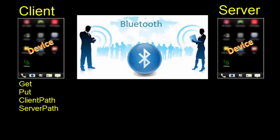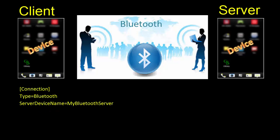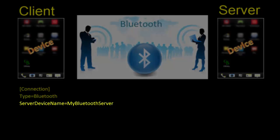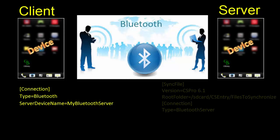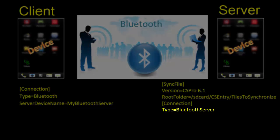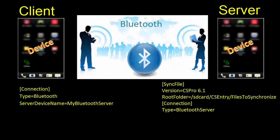On the client device, the only difference in the .pnc file for Bluetooth synchronization is the type of connection, which is Bluetooth, and the addition of the server device name indicating the name of the other tablet or phone that is acting as the server. The server tablet will also have a .pnc file with a connection type of BluetoothServer and without any GET or PUT commands. This is because all commands are initiated only on the client.